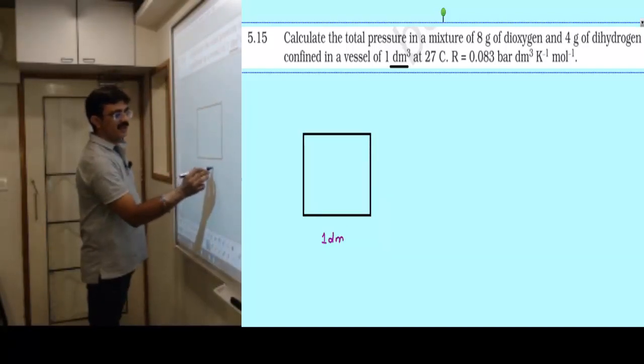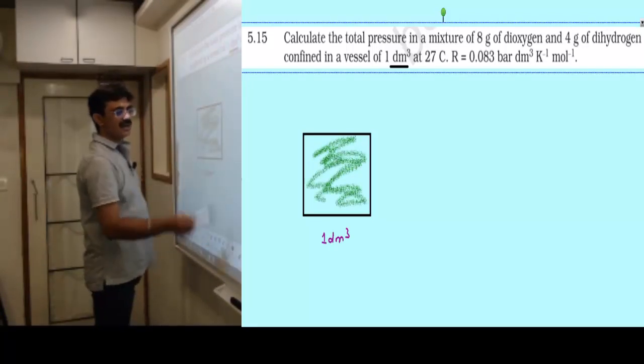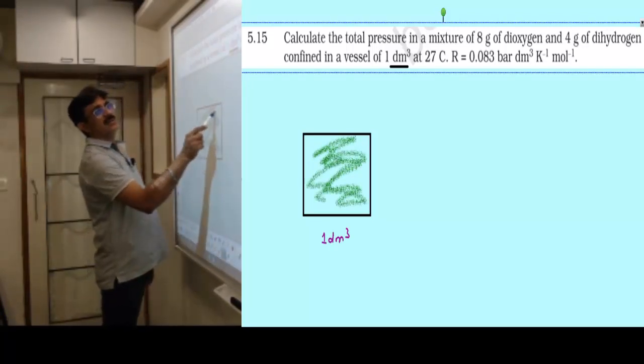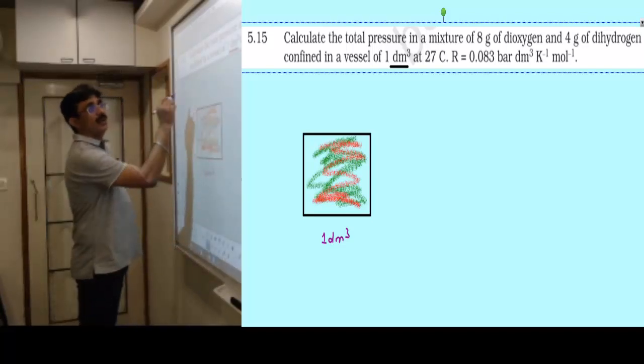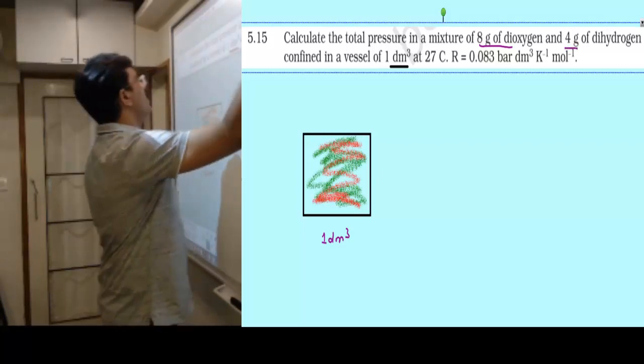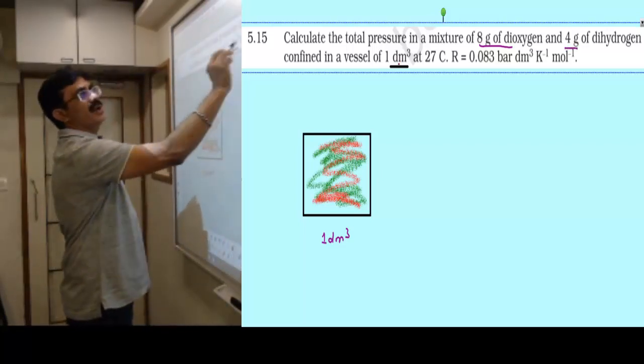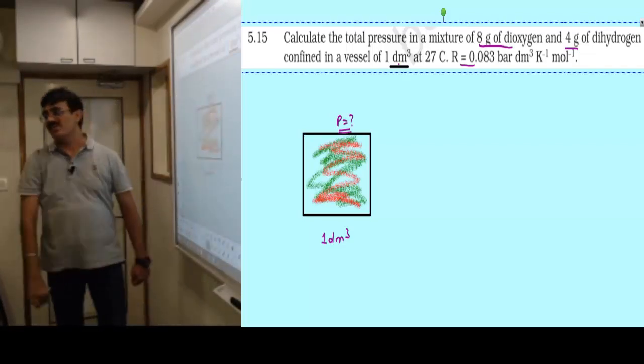Dioxygen mass is 8 gram, hydrogen mass is 4 gram. Volume is 1 decimeter cube, temperature is 27 degrees Celsius, which equals 300 Kelvin. What is the final pressure? Since you are going to solve it, I will just give hints. This type of problem I've already solved.